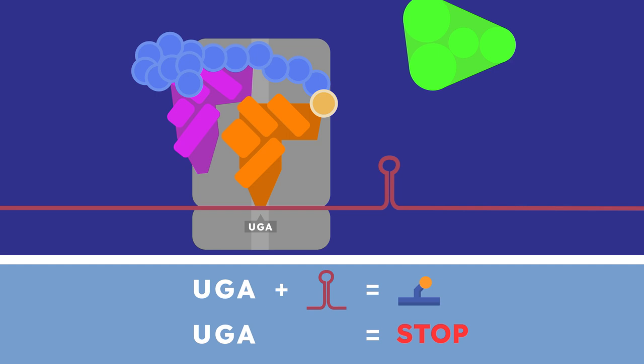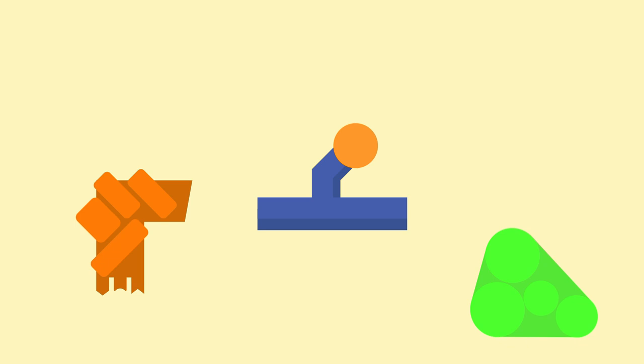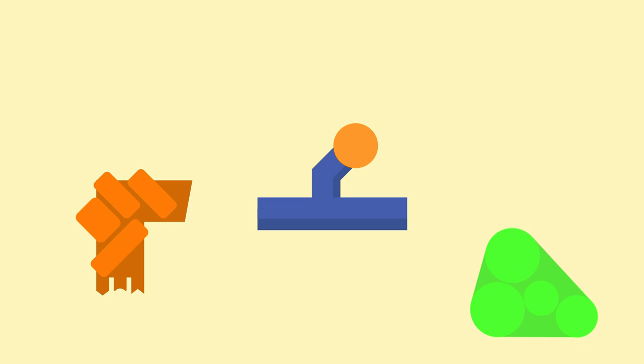Selenocysteine gets its own personal tRNA and elongation factor. But what about why the tRNA is charged with serine? Well, sulfur and selenium are very similar elements. So similar, in fact,